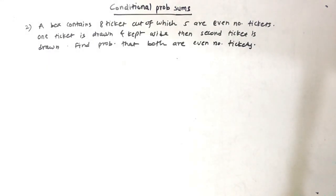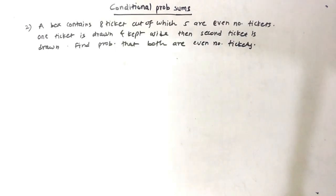The second question: a box contains 8 tickets, out of which 5 are even number tickets. One ticket is drawn and kept aside, then a second ticket is drawn. Find the probability that both are even number tickets.